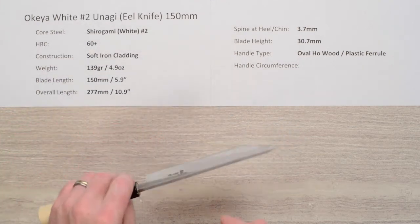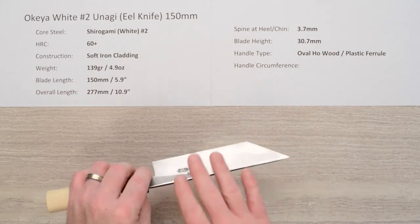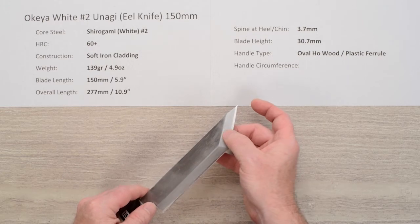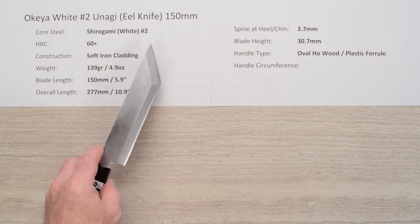The core steel, as mentioned, this is a single bevel style blade. The main steel on this side of the blade, peeking out to the edge there, is Shirogami or White Paper No. 2 Reactive Carbon Steel.